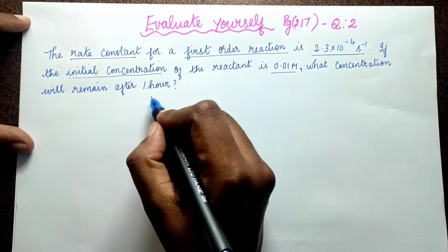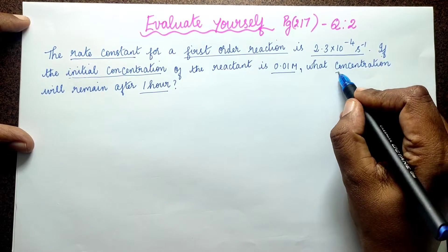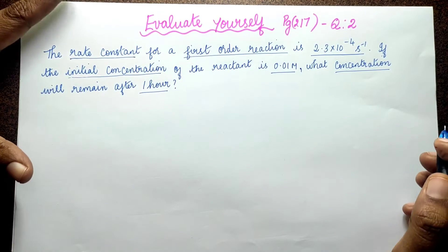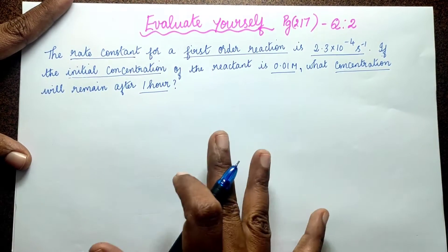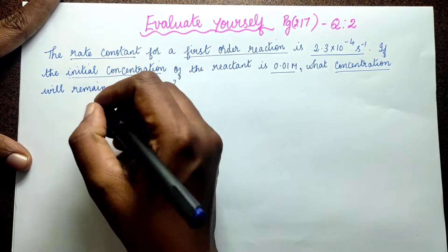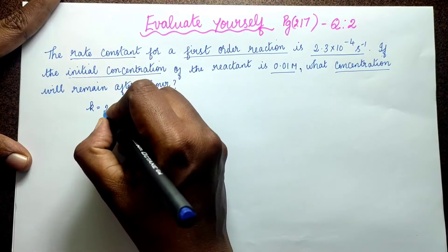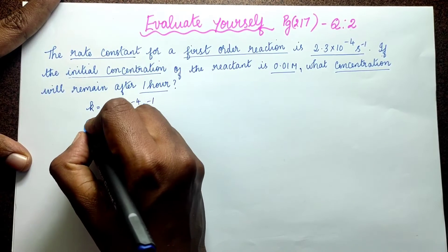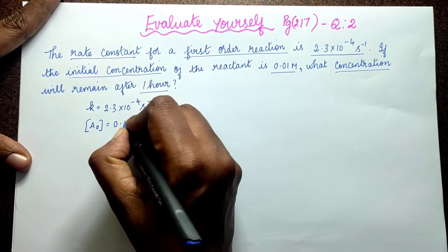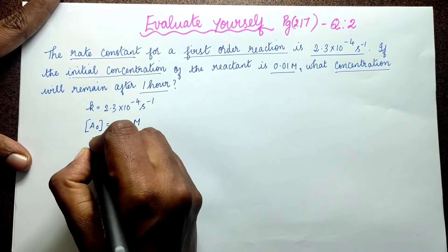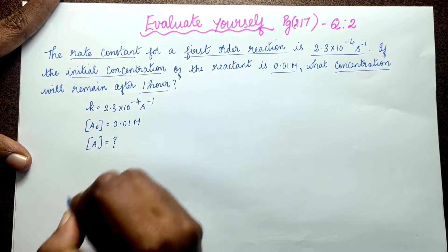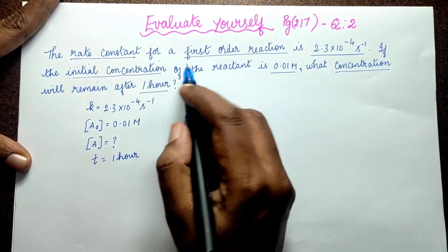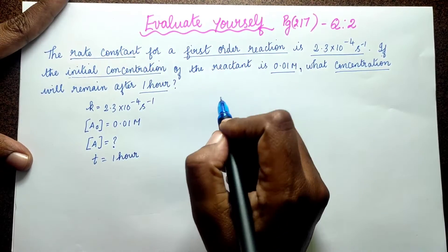What we need to find is the concentration after 1 hour — that is the final concentration we need to calculate. So, given: k = 2.3 × 10⁻⁴ per second, initial concentration [A₀] = 0.01 M, and time T = 1 hour. We substitute into the first order reaction formula.